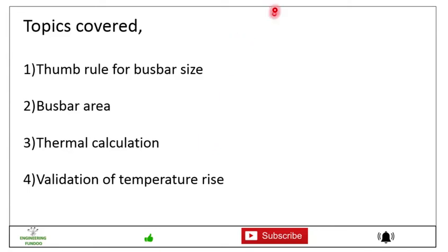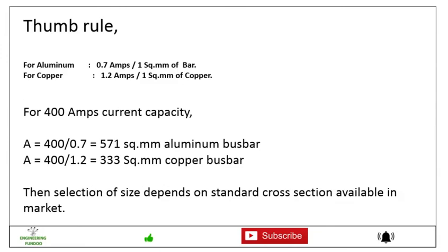And the last one will be the validation of the temperature rise, that is for the thermal validation. Friends, if we talk about the thumb rule, normally there is a general thumb rule that for aluminum busbar it will carry 0.7 ampere per square mm of the bar, that is one square mm cross section area, and for copper 1.2 amperes per one square mm of the copper bar it will carry the current.